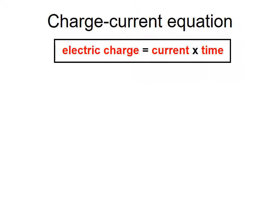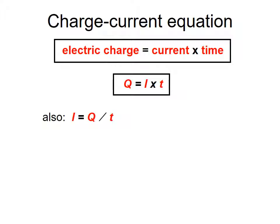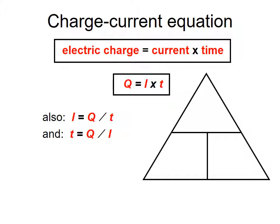There is always an equation in physics. The first one is the charge-current equation: charge equals current times time, or Q = It. You can rearrange it so current equals Q divided by t, or time equals charge divided by current. In IGCSE physics you can put that into an equation triangle, with charge on top and current and time on the sides.